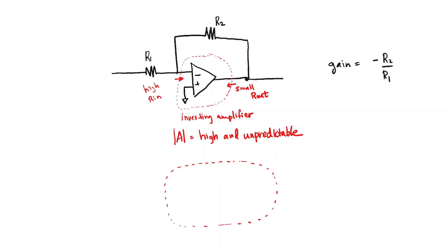You can use negative feedback for all of these transistor circuits as well. For example, I could replace the op amp with a three-stage transistor amplifier: a common collector stage for high input impedance, followed by a common emitter stage with the emitter resistor fully shunted for maximum gain, followed by another common collector stage to provide a low output impedance. These three transistor stages together would meet all of the required conditions and serve as an op amp replacement. You could then wrap resistors R1 and R2 around these circuits to control the gain using negative feedback. Hopefully now you've understood how it's possible to design any kind of gain from transistor circuits.